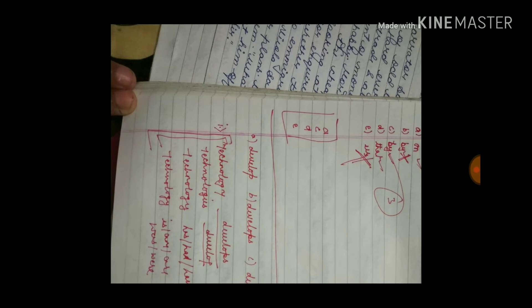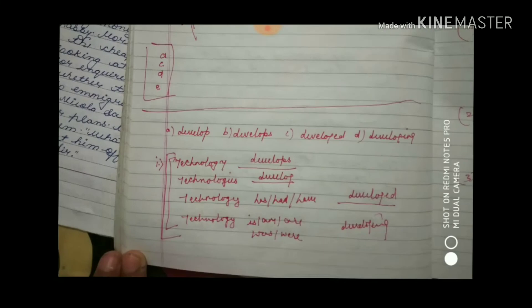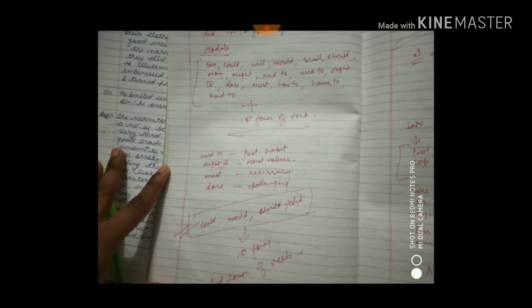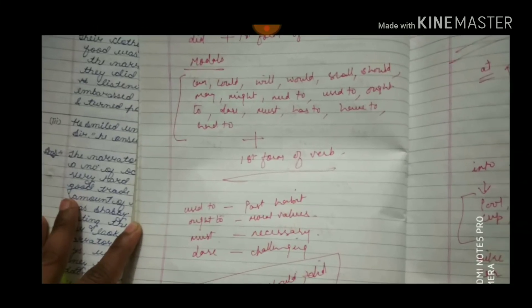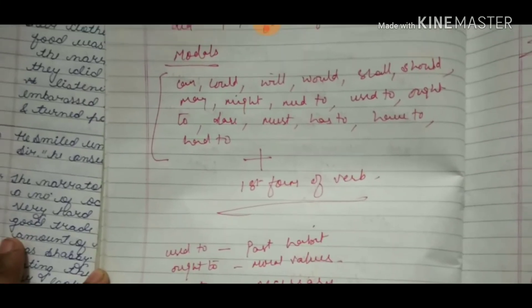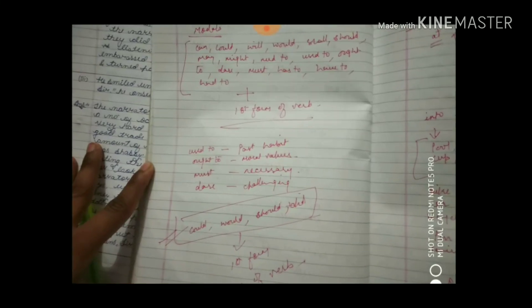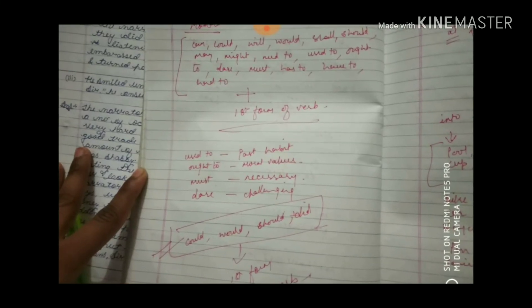You have the English paper, so keep many things in mind. As I've told you in other videos: with 'Did' — and also with Can, Could, Will, Would, Shall, Should, May, Might, Need to, Ought to, Used to, There, Must, Has to, Have to, Had to — the first form of the verb is used.